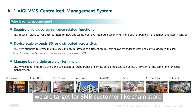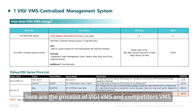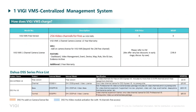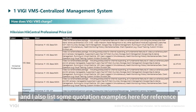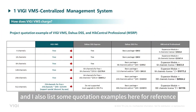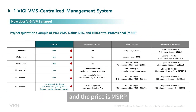We are targeting SMB customers like chain stores, budget hotels, and small schools. Here is the price list of VG VMS and competitor VMS. You can find it on the latest VG roadmap, and I have also listed some quotation examples here for reference. Our price is much more attractive than competitors, and the price shown is MSRP.